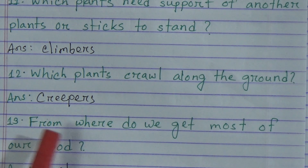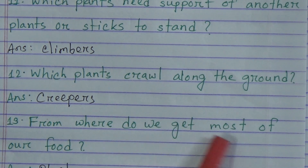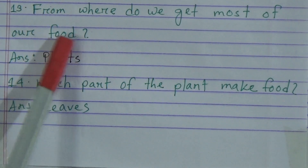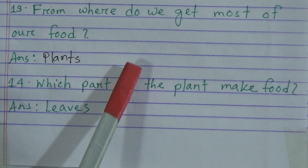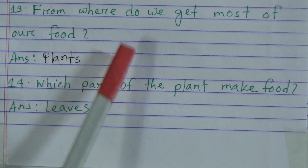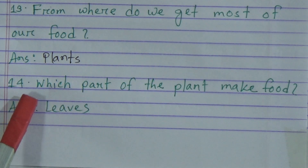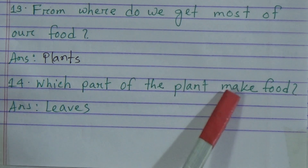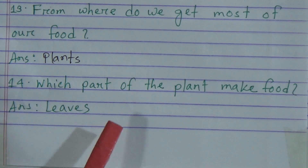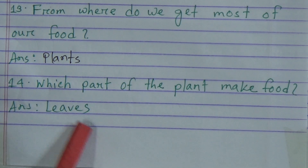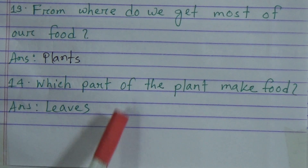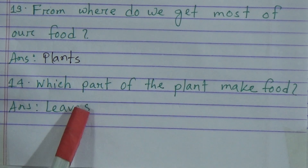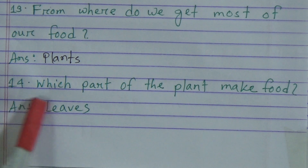Number thirteen: From where do we get most of our food? Answer: plants. We get most of our food from plants. Number fourteen: Which part of the plant makes food? Answer: leaves. Leaves are the kitchen of the plant — that means plants make their food by leaves.